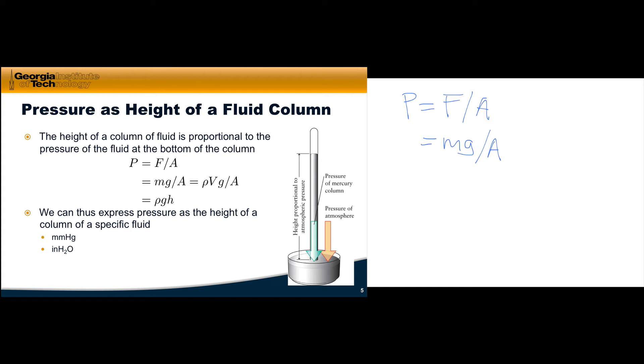If we plug that into the pressure formula, we get pressure equals mg/A. The mass can be written as the product of density ρ and volume. So pressure equals ρ times volume times g divided by the cross-sectional area. If the column is cylindrical, the ratio of volume to area is just the height. We can write this as ρ times g times h.